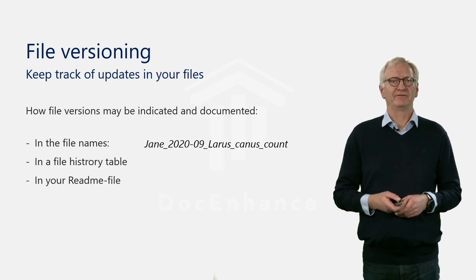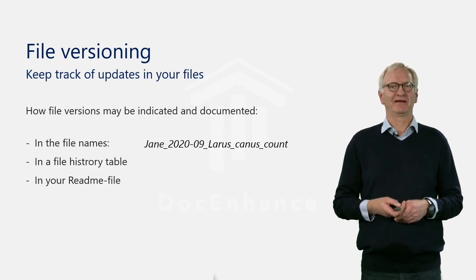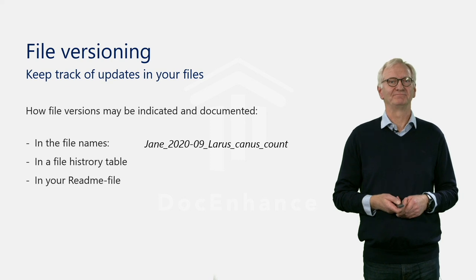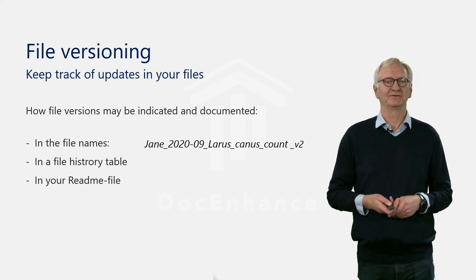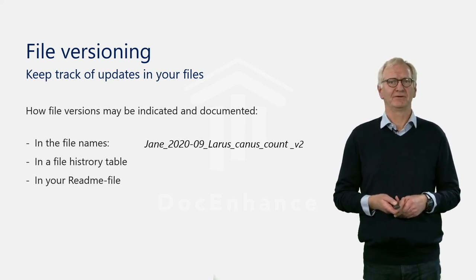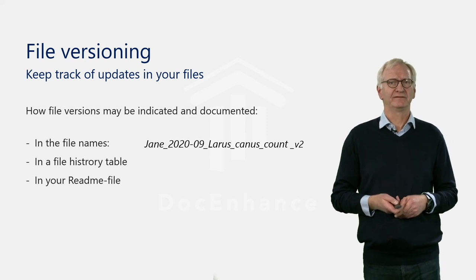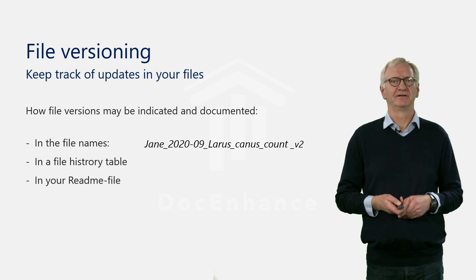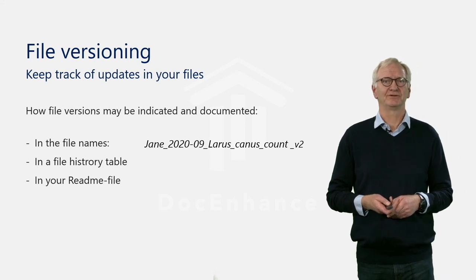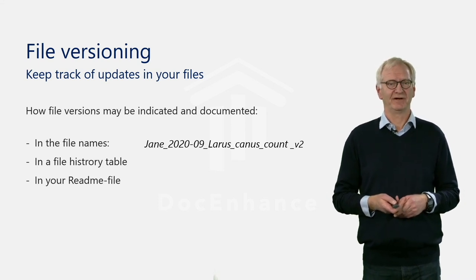So if you update the file, this should be indicated in the file name nicely with the version number or the date of the new version. To include a table of the update history of the file in the file itself is a good recommendation. And don't forget to document all such updates in your readme file.